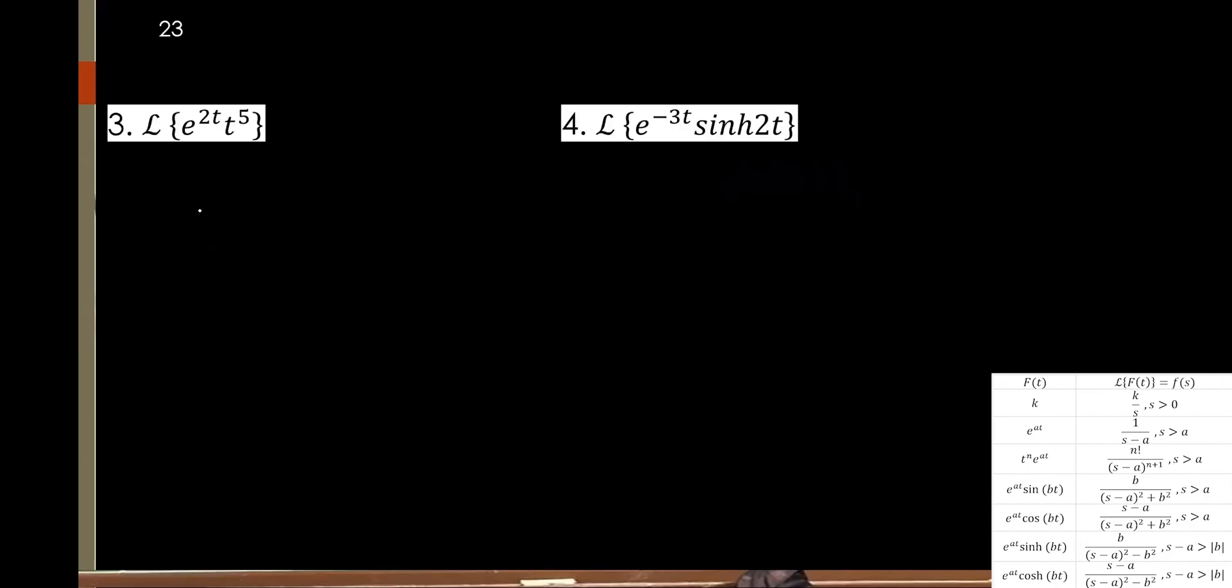Sige nga. This one, go. Is it over? Raised to 6. So what is 5 factorial? 120 over s minus. Yeah. So imagine, guys. This one, go. Guys, just, you know, formulas. Formulas.